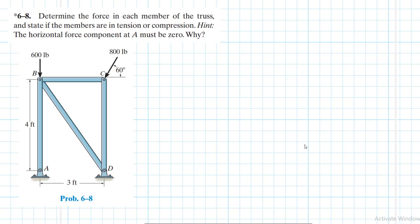Welcome to this screencast. The problem reads: determine the force in each member of the truss and state if the members are in tension or compression. The hint says the horizontal force component at A must be zero. This problem comes from Engineering Mechanics Statics, 13th edition by RC Hibbeler.